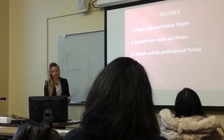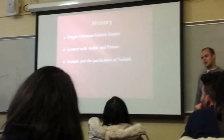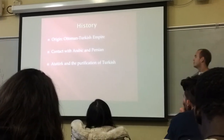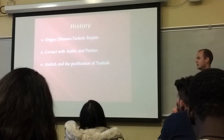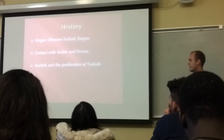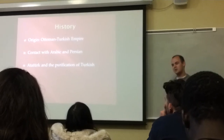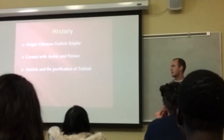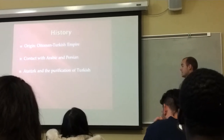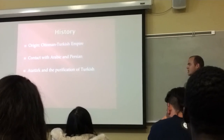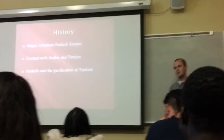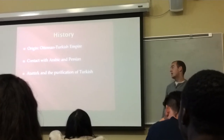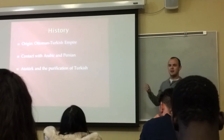History: Turkish originated with the Ottoman Turkish Empire. They controlled much of the territory prior to World War I in the Balkans, the Middle East, and parts of Asia. After World War I, the Ottoman Turkish Empire broke up into nation states, which is how the map looks today. During that time, they had extensive contact with Arabic and Persian speakers, with a lot of trading and religious exchange. Until 1928, they even used Arabic script.